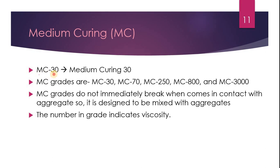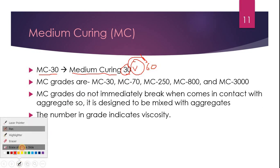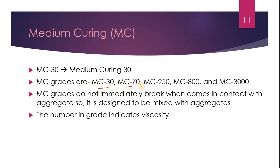Back to the question: what is MC30? MC means medium curing, and 30 represents viscosity. This means the minimum viscosity is 30 and the maximum is 60 (two times 30). MC grades are MC30, MC70, MC250, MC800, and MC3000. Similarly, these grades exist for RC and SC. Generally MC30 and MC70 are used for prime coat and tack coat purposes. MC grades do not break when they come in contact with aggregate, so they are designed to be mixed with aggregate.